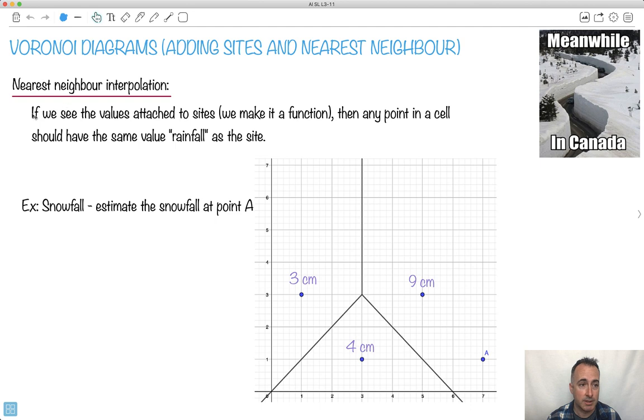It's actually really quite simple. So if we see some values attached to the site, instead of just location of each of these sites, what if we made it like some kind of function? In other words, each of these means some number.